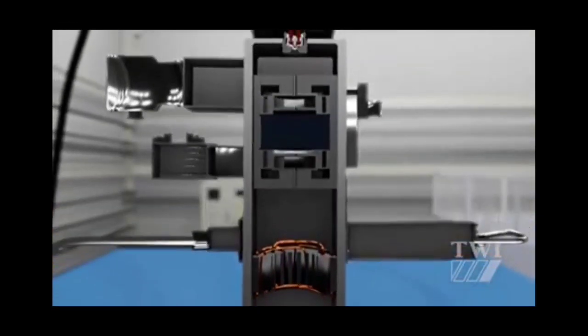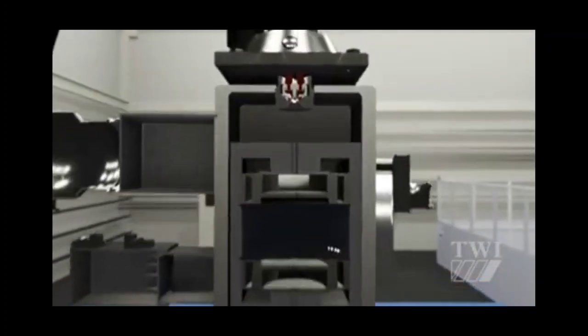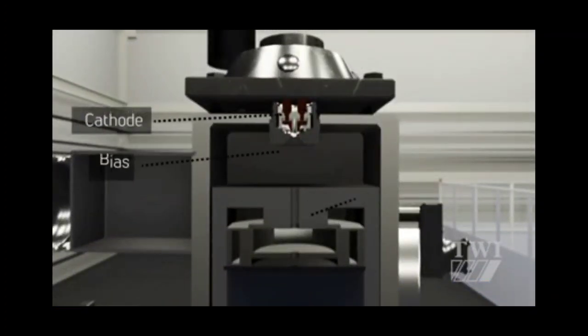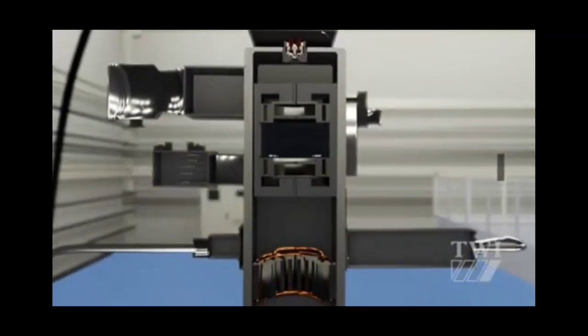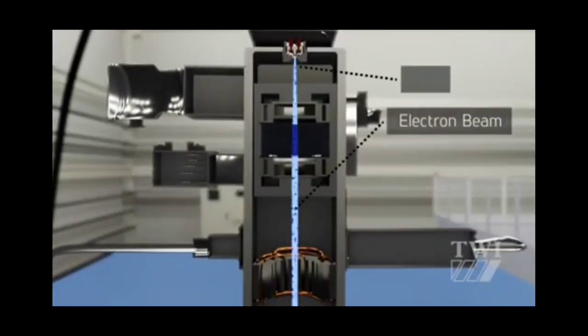The electrons are emitted by a cathode, also known as an electron gun. Due to a high voltage applied between the cathode and the anode, the electrons are accelerated up to 30 percent to 60 percent of the speed of light.